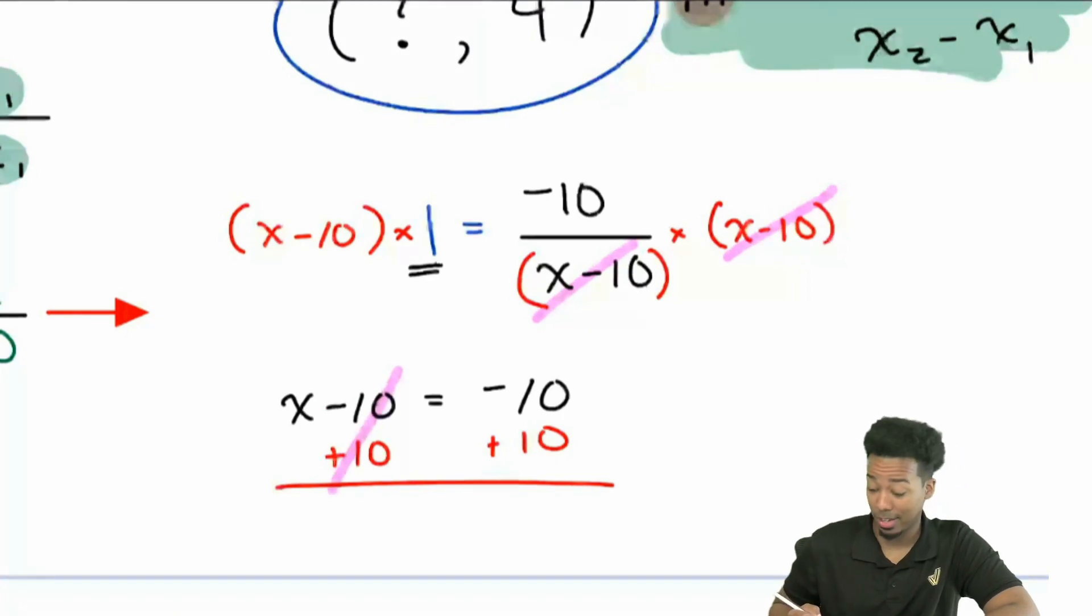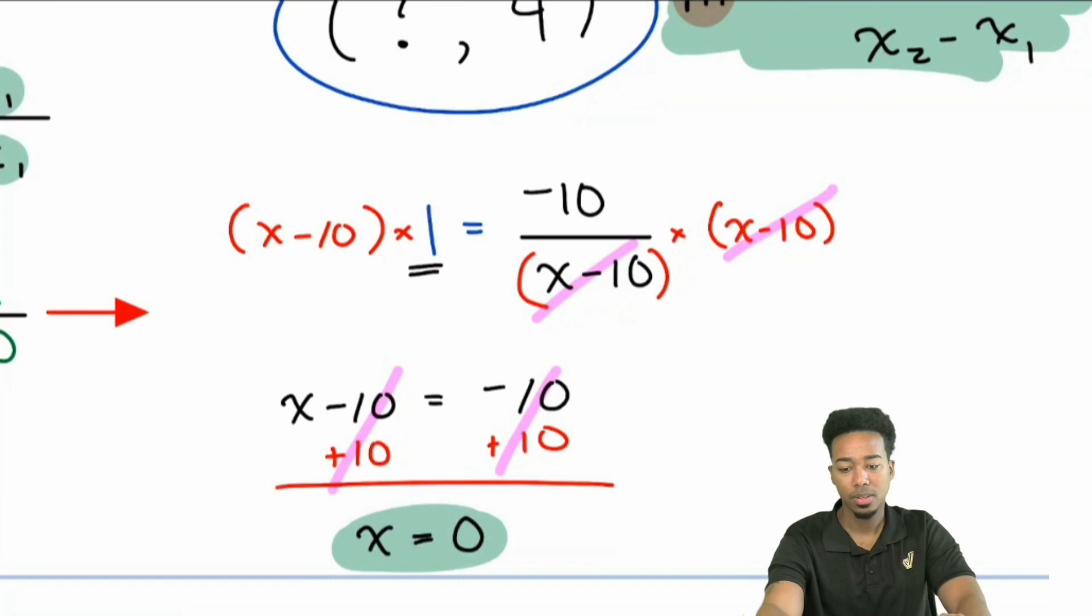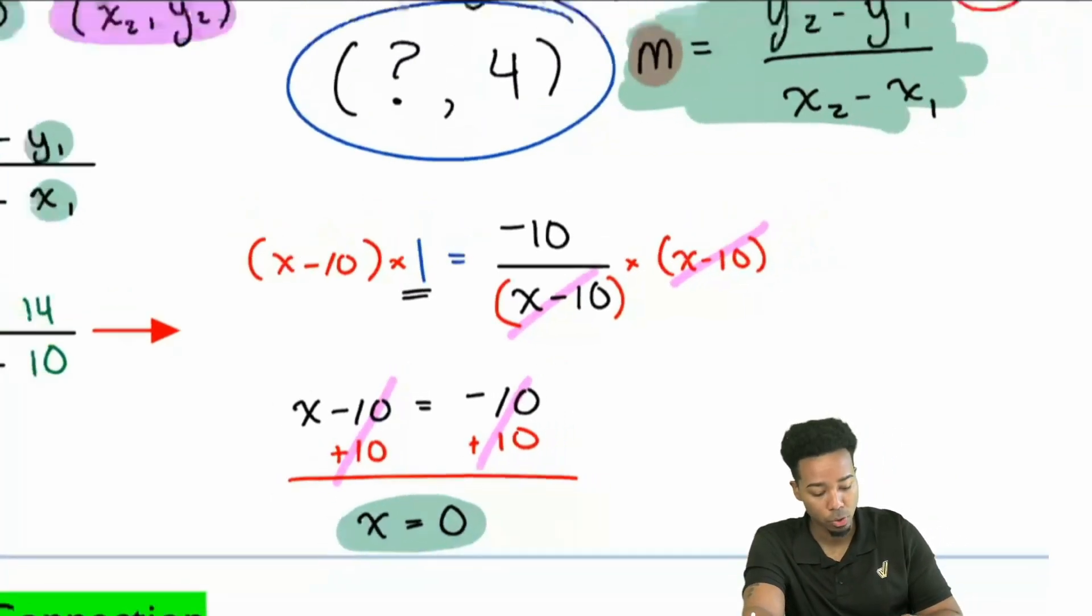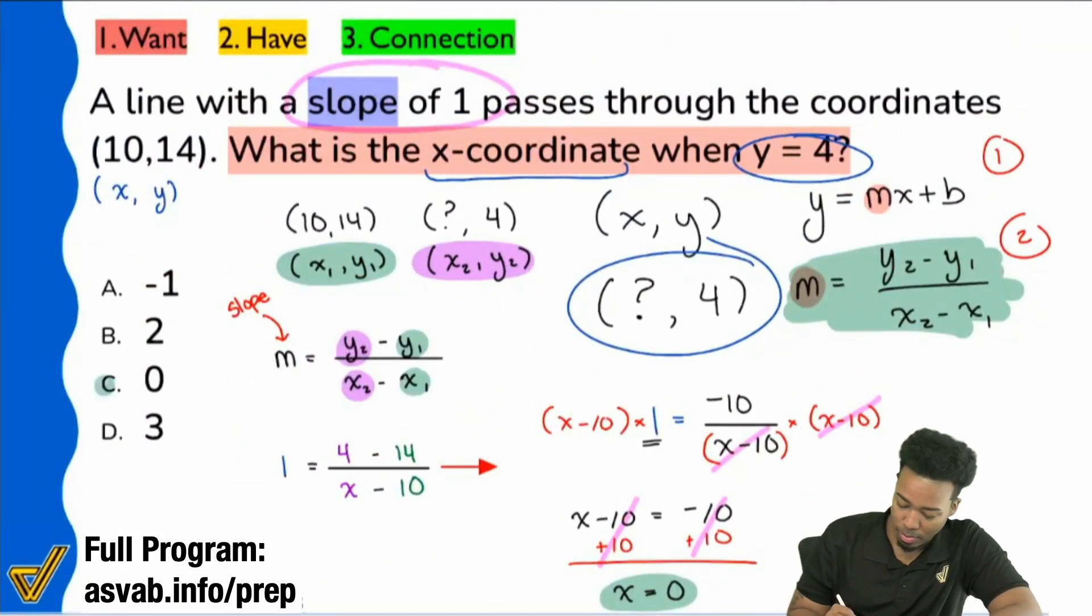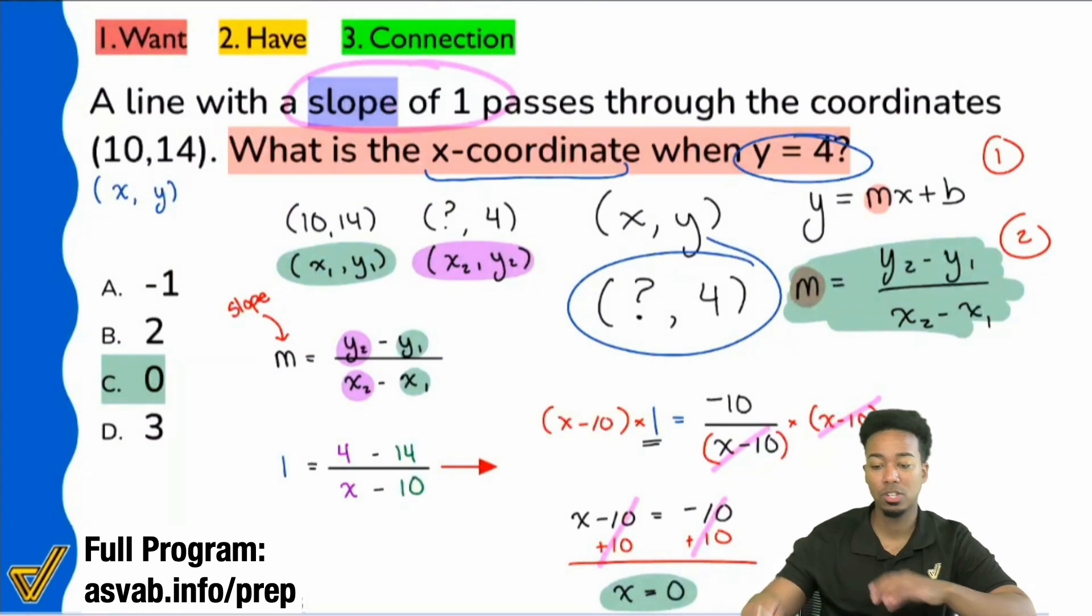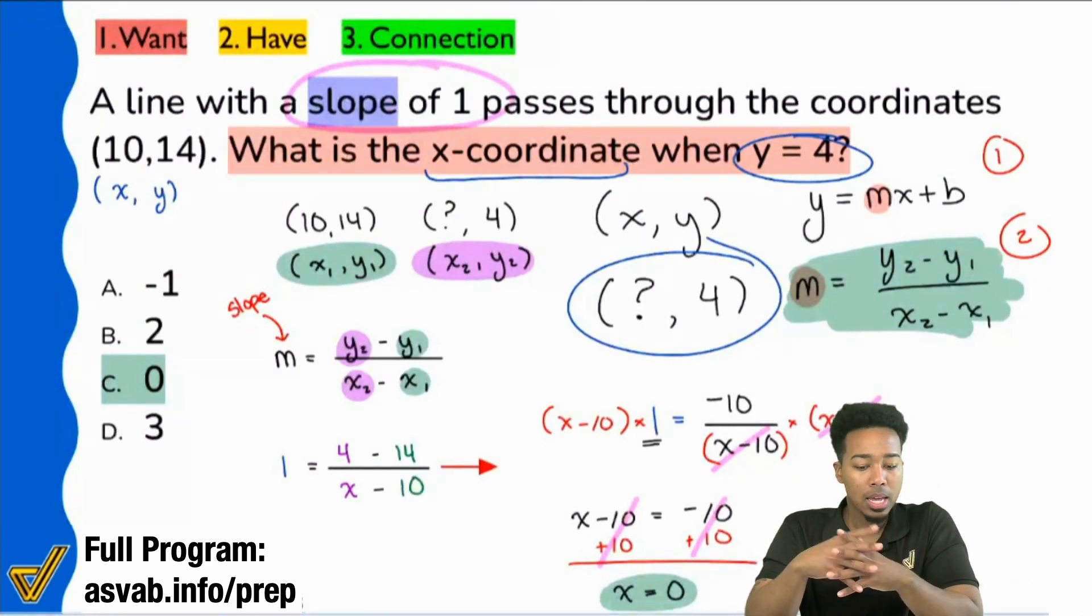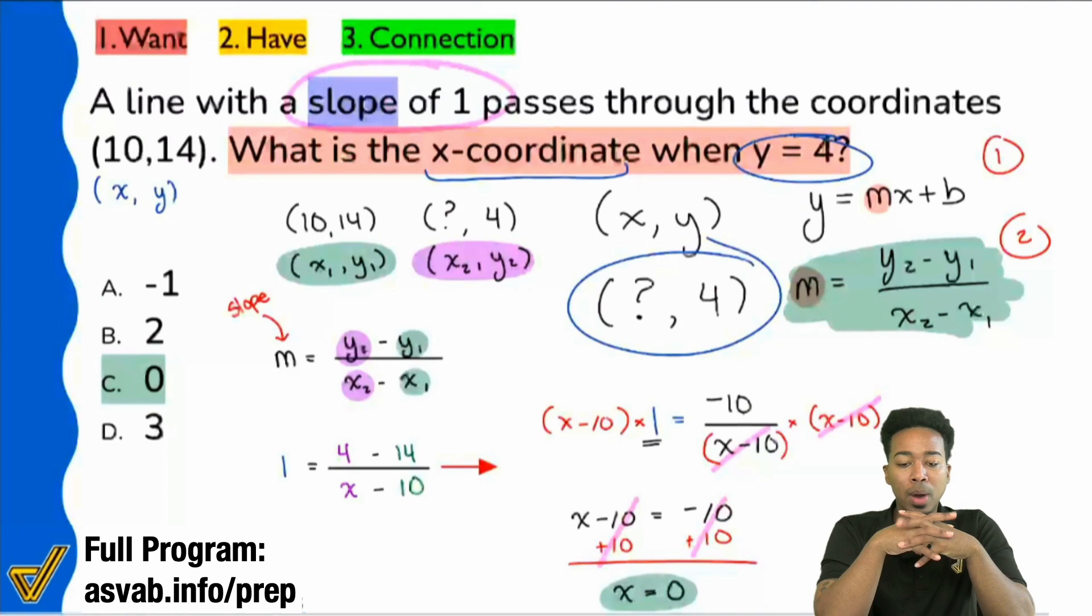That's going to cancel on the left. And it's going to cancel on the right. And what we end up getting is x equals 0. We end up getting x equals 0. And that's going to be the answer. And I'm going to zoom out so you can take a screenshot if you'd like to. But what the answer is going to be here is C, 0.